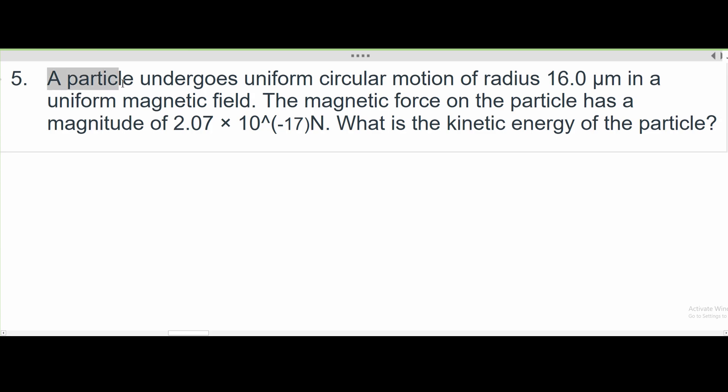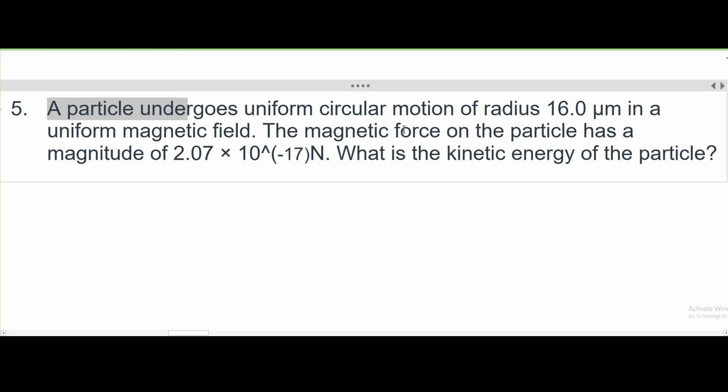For number five, we're told that we have a particle that undergoes uniform circular motion of radius 16 micrometers in a uniform magnetic field. The magnetic force on the particle has a magnitude of 2.07 times 10 to the negative 17 newtons. What is the kinetic energy of the particle?